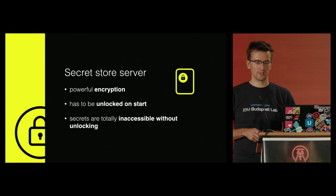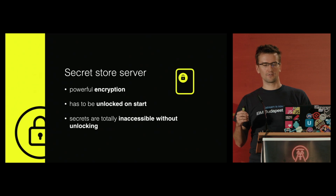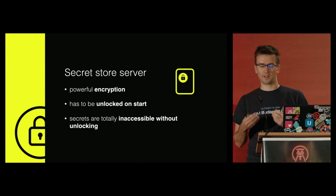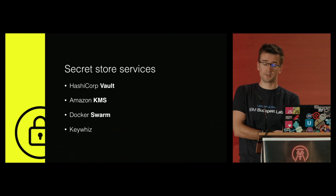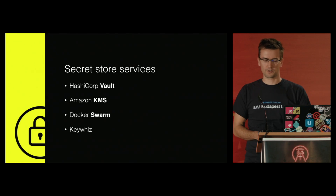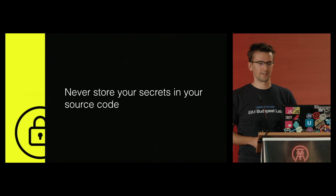The secret storage server has some really nice superpowers, like ensuring safety with really powerful encryption. The whole secret storage has to be unlocked when the server starts, so it actually needs human intervention at startup. This means they are useless and inaccessible — your secrets — without unlocking, even if you physically compromise the server and rip out the disk from it. Some services you can use: HashiCorp Vault, KMS from Amazon, Swarm from Docker, and etcd. I've worked with Vault so far — it's pretty great, free and open source, you have to host it, and it works very well with Node or PHP or any programming language. Never store your secrets in your source code — there are plenty of examples of public GitHub searches for private keys and passwords; the lack of security is just frightening.